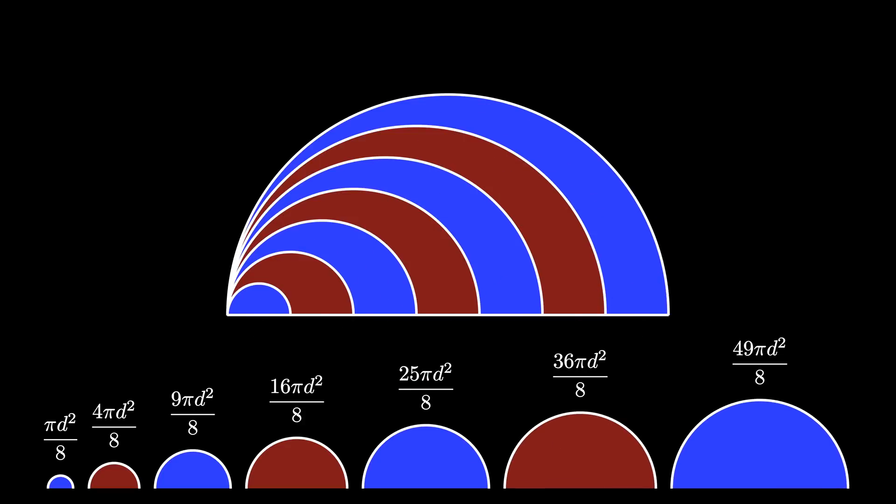If we call the area π d² over 8 the value x, then the areas of the circles are x, 4x, 9x, 16x, and so on, each time we have the next square times x.